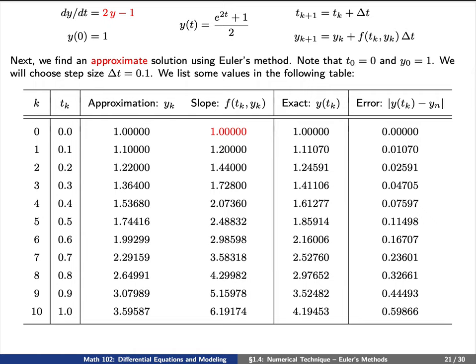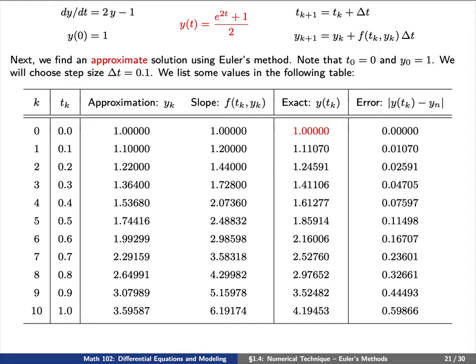Finally, we can find the exact value y of t sub 0 because we know the exact value of our solution, which is y of t equals e to the 2t plus 1 over 2. So this explains the first row when k equals 0.